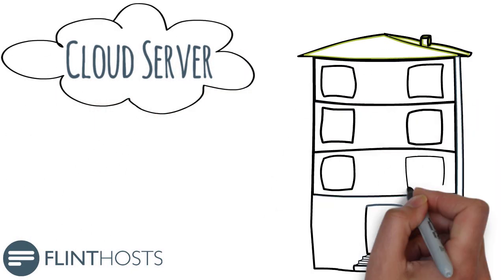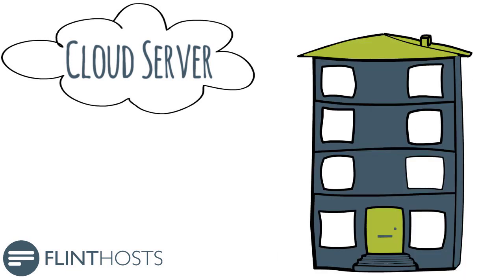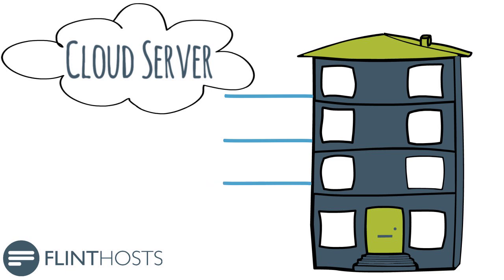The best option is a Flint Hosts cloud server. Flint Hosts cloud servers are like luxury apartments. An apartment is part of a larger building. Rather than one piece of land allowing for only one house, the same size piece of land is able to serve multiple homes, so by the economies of scale, the cost of a luxury apartment is considerably lower than that of a house. Even though luxury apartments share the same block, like houses they have their own water, their own power, their own rooms — none of these are shared with other apartments. They are for the exclusive use of the occupant, so they're always available.